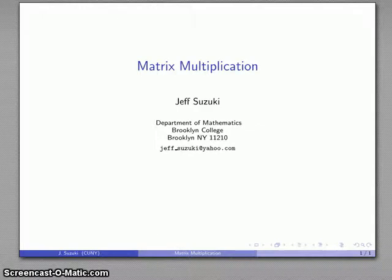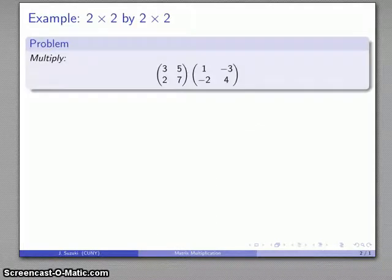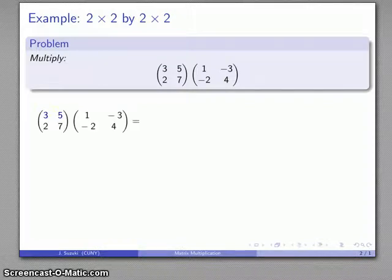So let's see how we multiply two matrices. For example, we might multiply a 2 by 2 matrix by another 2 by 2 matrix. I might take the matrix 3, 5, 2, 7 and multiply it by 1, negative 3, negative 2, 4.